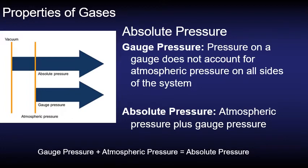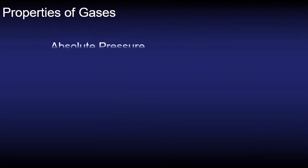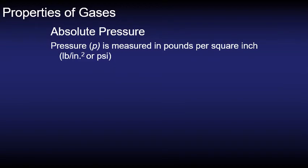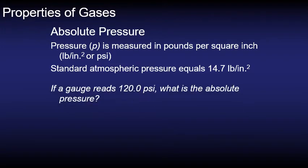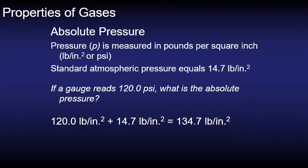So how do we calculate absolute pressure? Pressure in general for pneumatics is going to be calculated in pounds per square inch or psi and we are always going to use 14.7 psi as our standard atmospheric pressure. So if a gauge reads 120 psi what is the absolute pressure? The calculation is just to add the gauge pressure to the standard atmospheric pressure of 14.7 and so in this case it would be 134.7 psi.